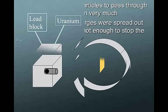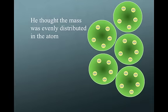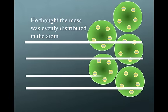The fluorescent screen will change colors and glow. So, he expected alpha particles to pass straight through without changing direction very much. But, because the positive particles were spread out evenly, alone, they were not enough to stop the alpha particles. So, you've got this plum pudding model where you have everything being held together by the opposite charges evenly distributed. He said these alpha particles should go straight through. This is exactly what he was thinking at the molecular level. He said these positively charged alpha particles are going to go straight through these atoms.